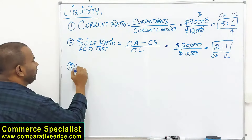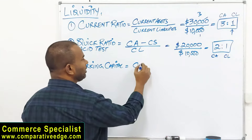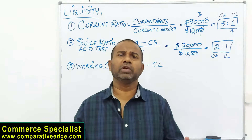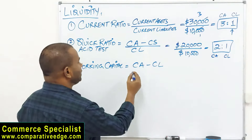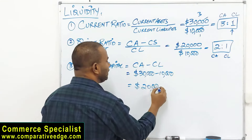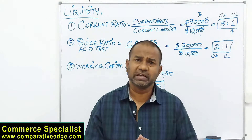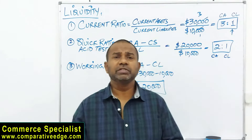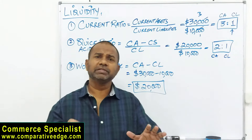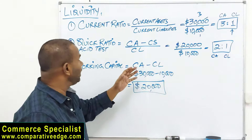The third measure is working capital: current assets minus current liabilities. If current assets are $30,000 and current liabilities are $10,000, working capital is $20,000. This amount is available for the day-to-day operation of the business. How much is enough depends on the size and nature of the business. As long as you have a positive working capital, the company is in a safe position — higher is generally better, but too much of anything is not good.